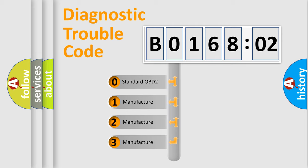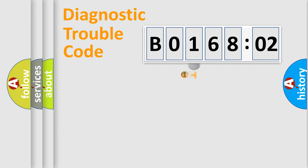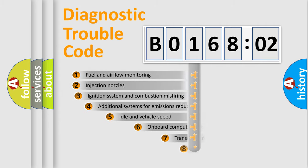If the second character is expressed as zero, it is a standardized error. In the case of numbers 1, 2, 3, it is a car-specific error.